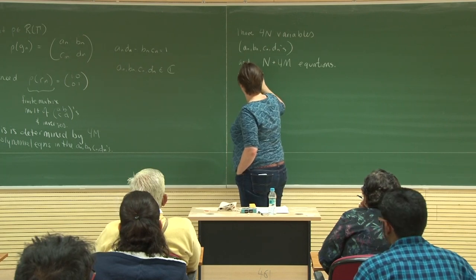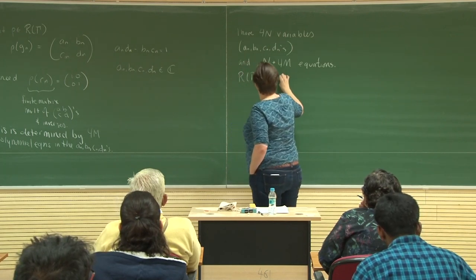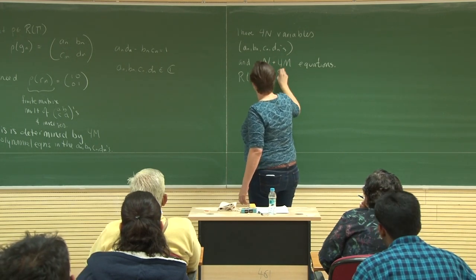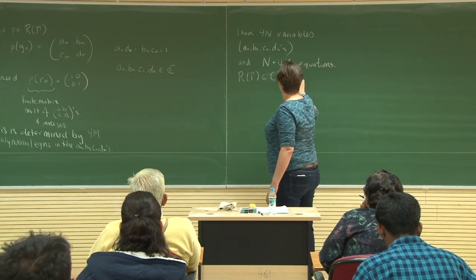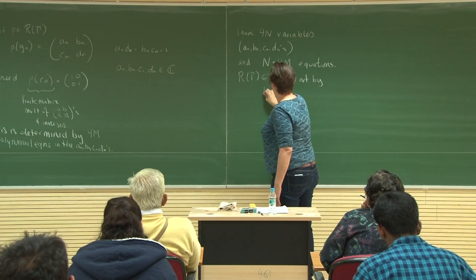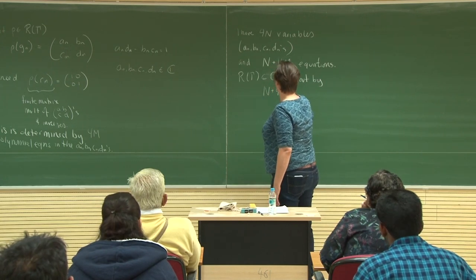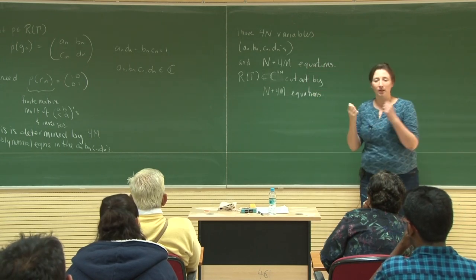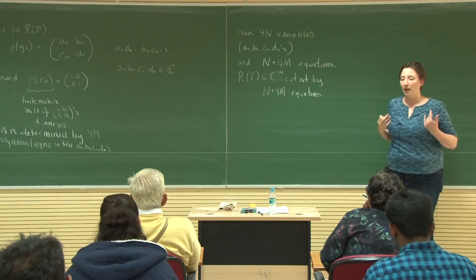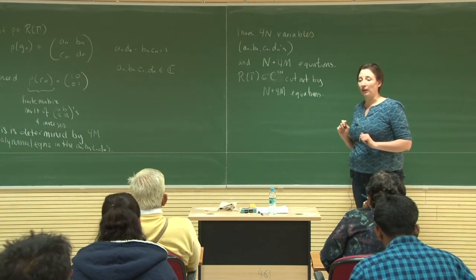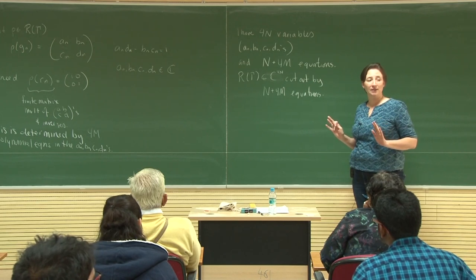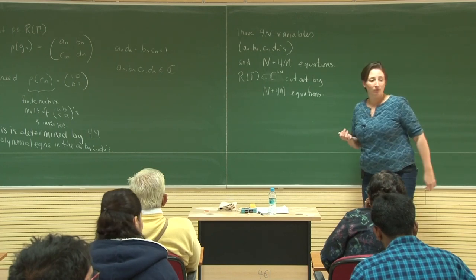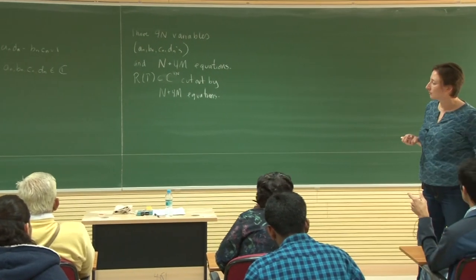So R(gamma) sits inside ℂ^{4N}, and it's cut out by N plus 4M equations. I make no claims that the equations are independent of one another, but if we use all of those equations we'll be sure that our representation is well defined.